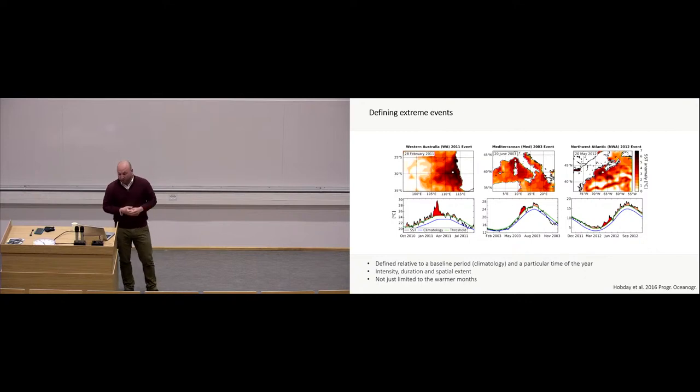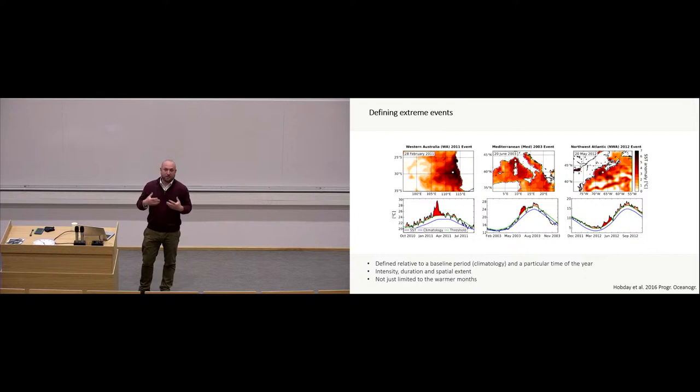This is a study on marine heatwaves, where they looked at three different heatwaves, one in Western Australia, another one in the Mediterranean, and one in the Northwest Atlantic. So first of all, heatwaves are not only a thing that happen on land, right? The ocean absorbs a lot of this heat. But one question is, how do we define extreme events? And heatwaves is one example of an extreme event.